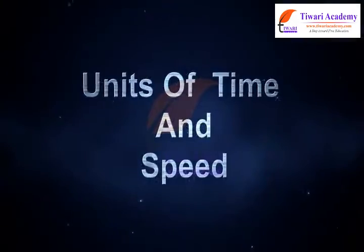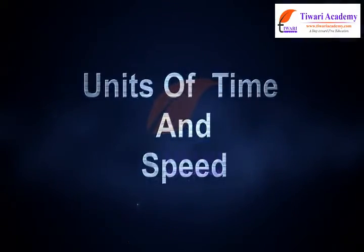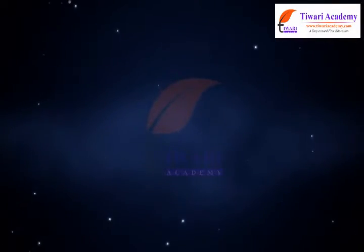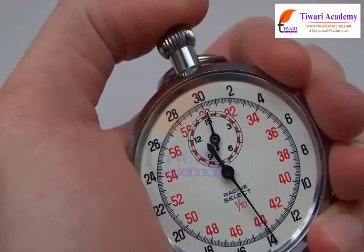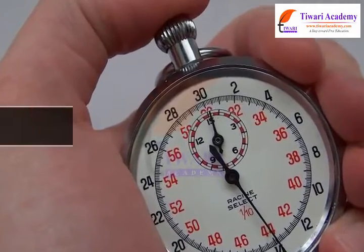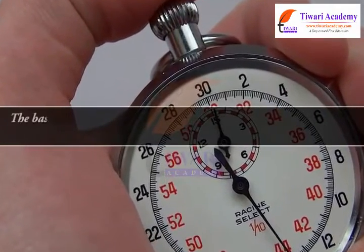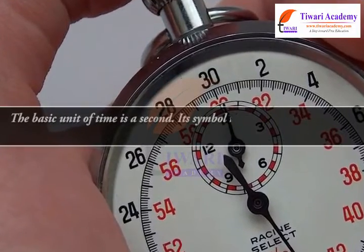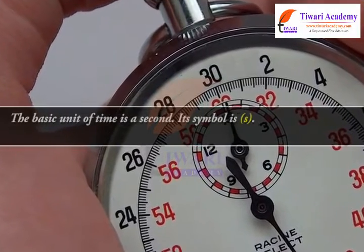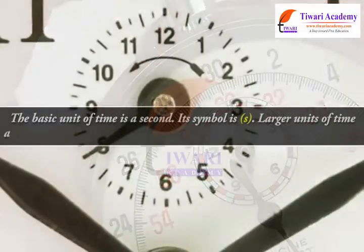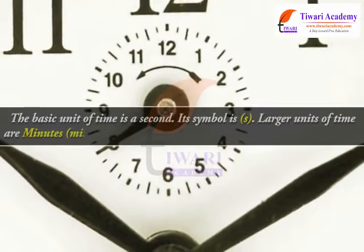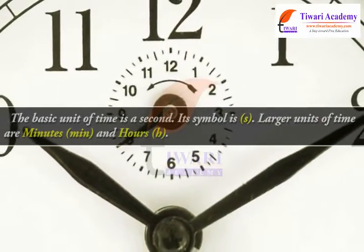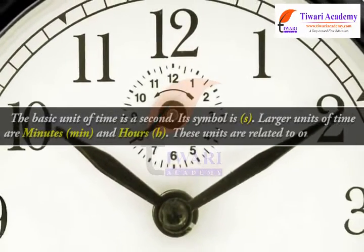Units of time and speed. The basic unit of time is a second. Its symbol is S. Larger units of time are minutes, abbreviated as min, and hours, abbreviated as H. These units are related to one another.